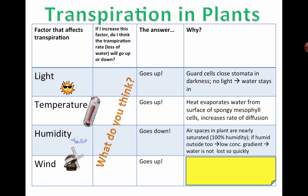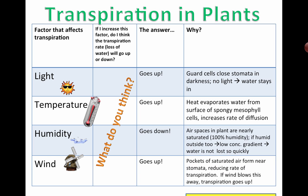Wind is actually going to speed up the rate of transpiration. Inside the stomata, you have close to pure saturated air, and right outside it will also be pretty humid — pockets of saturated air hanging around. If it's really windy, the wind blows away that saturated air, creating a sharp concentration gradient, which speeds up the rate at which water can escape. So more wind means more transpiration.